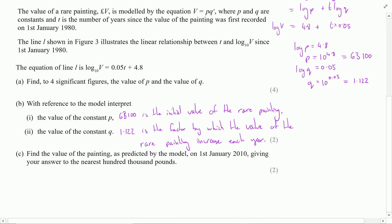For the final part of this question, we're wanting to predict the cost of the painting on January 1st, 2010, giving our answer to the nearest hundred thousand pounds. So the model started on the 1st of January 1980, so to 2010 that's going to give us 30 years. This is simply saying that t is going to be equal to 30.